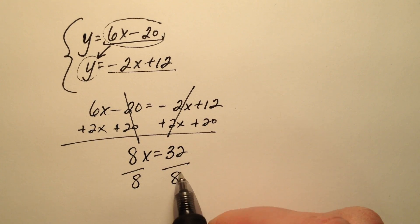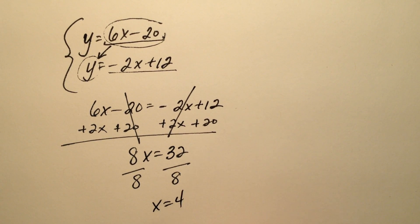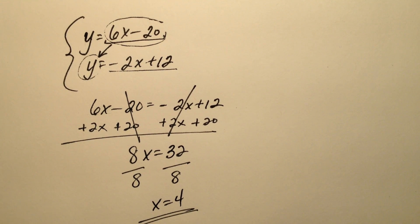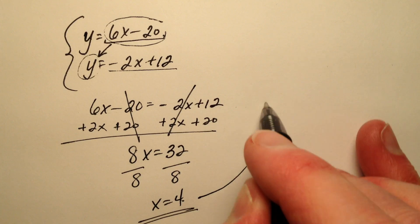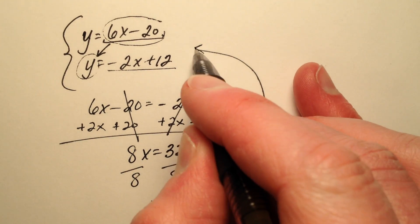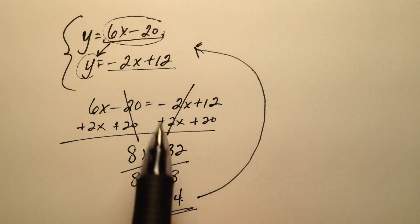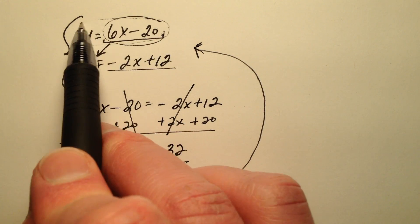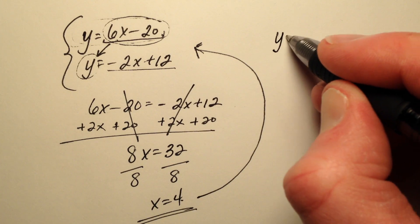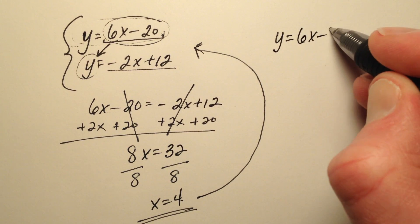I'm going to divide everything by 8 and x equals 4. Now that I know the value for x, I'm going to plug it back into one of these original equations to get the value for y. Let's plug it back into the first one where y equals 6x minus 20.